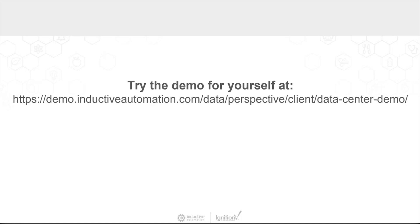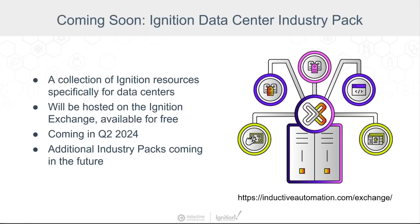Stay tuned. I'll turn it back over to Derek, who will talk briefly about the Data Center Industry Pack coming in 2024. Something we expect to release in the first half of 2024 is the Data Center Industry Pack, which will be one of several vertical packs we develop over time, each focusing on a specific industry. Since we launched the Ignition Exchange back in 2019, it's been used for finding and sharing community-made resources to help you build Ignition projects faster. With Industry Packs, we're expanding the Exchange to offer collections of resources designed for the needs of specific industries.